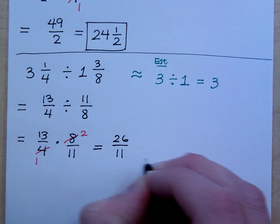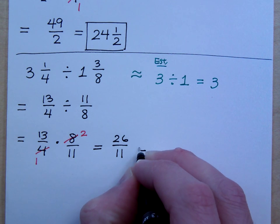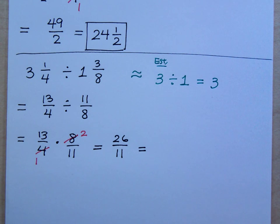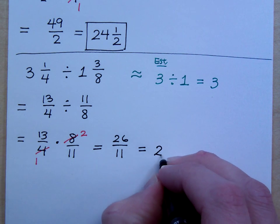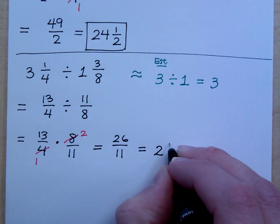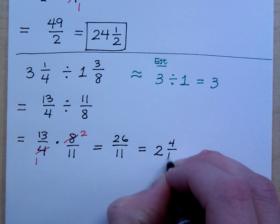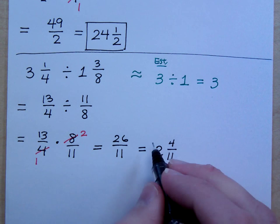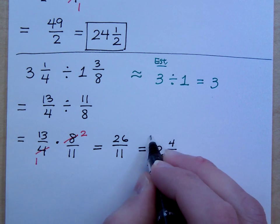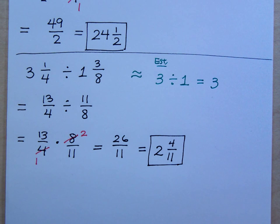So what do we have? 26 over 11. Which, if we make this a mixed number, becomes what? How many times does 11 go into 26? Twice with the remainder of what? 4. So 2 and 4 over 11. 2 and 4 elevenths. Is that reasonably close to our estimation from the beginning? Yeah. Yeah. So I feel good about this guy.